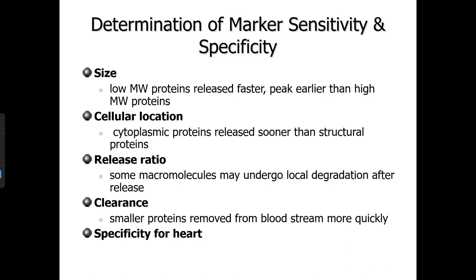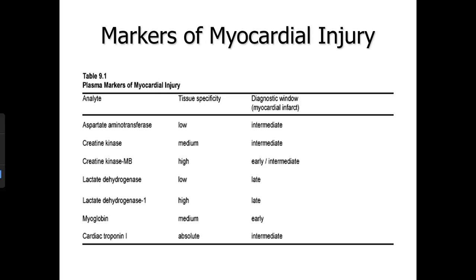Markers of myocardial injury: aspartate aminotransferase (AST) has low tissue specificity and an intermediate diagnostic window. Creatinine kinase (CK) has medium tissue specificity and an intermediate window. CK-MB has high tissue specificity but appears early to intermediate. LD/LD1 and myoglobin are no longer commonly used. Cardiac troponin I has absolute specificity with an intermediate diagnostic window. CK-MB increases and stays elevated for a significant period; AST shows a moderate increase.